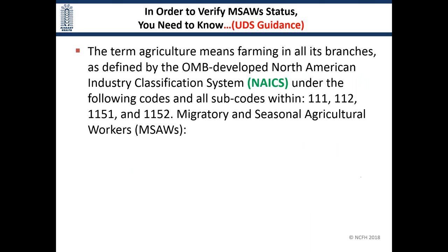Additional language in the UDS guidance talks about the definition of agriculture, referring to the North American Industry Classification System, or NAICS. This is a means of classifying every possible occupation in the country, promulgated by the Office of Management and Budget. Sections coded 111, 112, 151, and 152 define agriculture, and any workers involved in those tasks are considered agricultural workers.